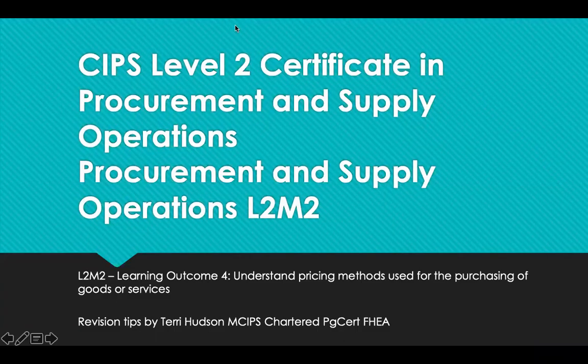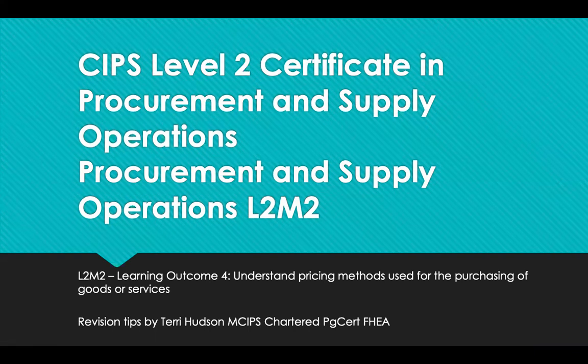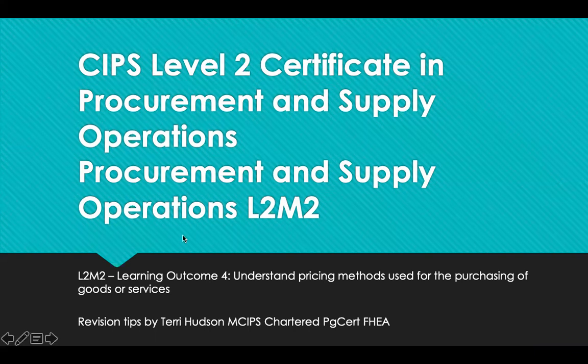Hello and welcome to revision tips for CIPS Level 2, certificate in procurement and supply operations. This is module 2, procurement and supply operations, and it's learning outcome 4, which is to understand pricing methods used in purchasing of goods and services.